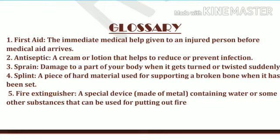Splint: a piece of hard material used for supporting a broken bone when it has been set. Fracture की case में जो broken bone है उसको support देने के लिए कोई भी hard piece यूज करते हैं — जैसे cardboard या newspaper की sheet — ताकि broken bone को support मिल सके। इसे splint बोलते हैं।